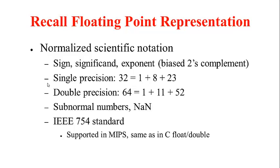There is a large set of higher level language programs which use floating point, so the MIPS instruction set needs to support floating point instructions as well. Recall the normalized scientific notation for floating points: we have a sign bit, a significand in normalized scientific form, and an exponent in biased two's complement representation. There is an IEEE standard, IEEE 754, which supports single precision and double precision. Single precision uses 32 bits: 1 sign bit, 8 exponent bits, and 23 bits for the significand. Double precision uses 64 bits total: 1 sign bit, 11 exponent bits, and 52 bits for the significand.